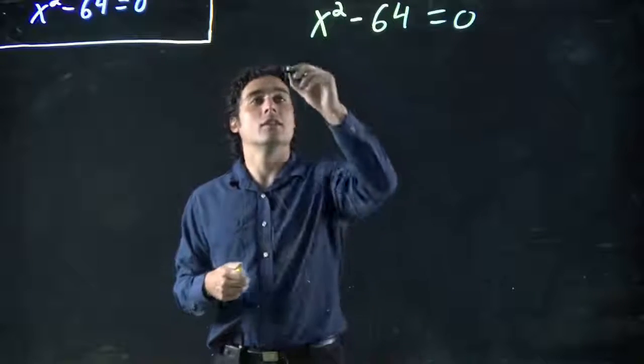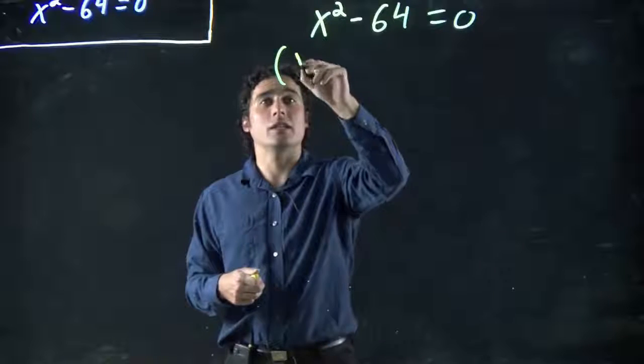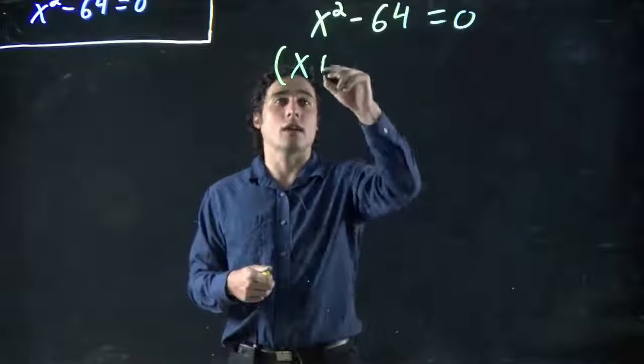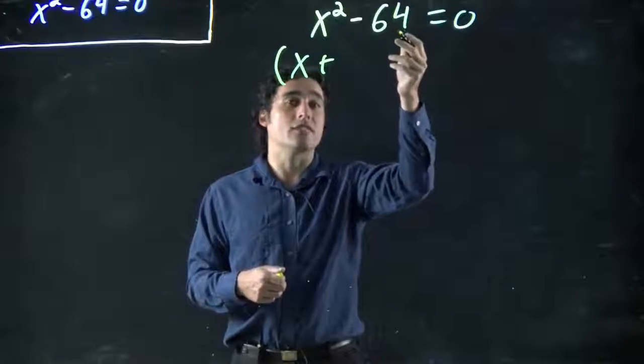So you're going to see what I mean. So what do we got? Square root of x squared would just be x plus the square root of the second term. Square root of 64 is 8.